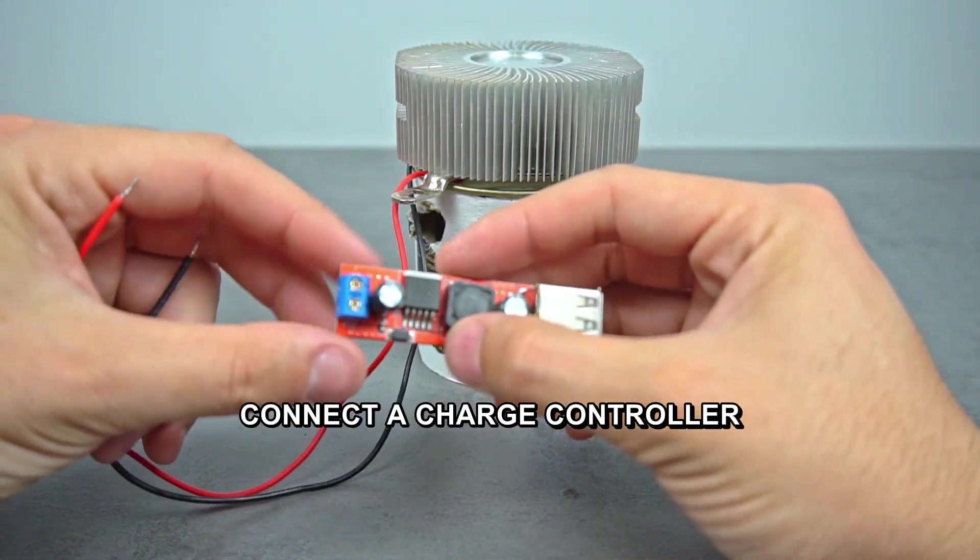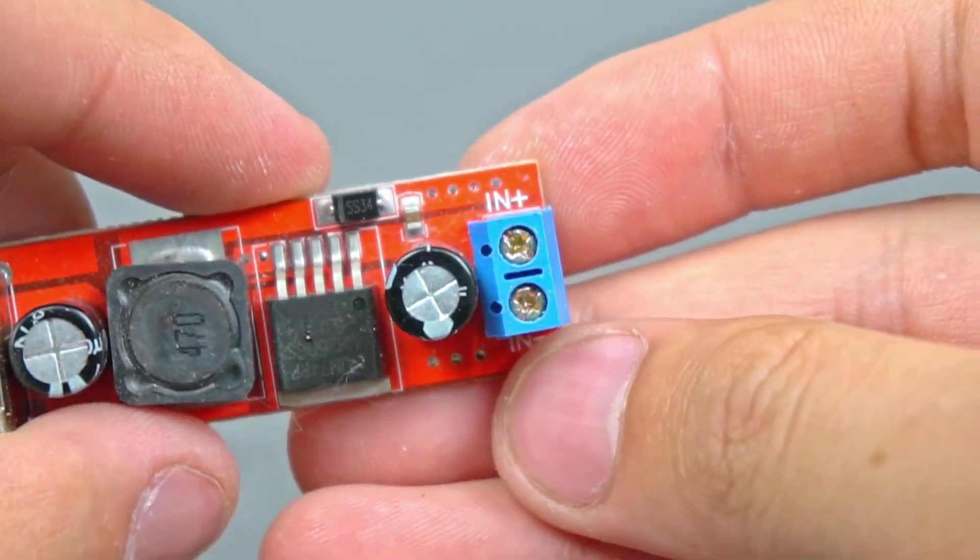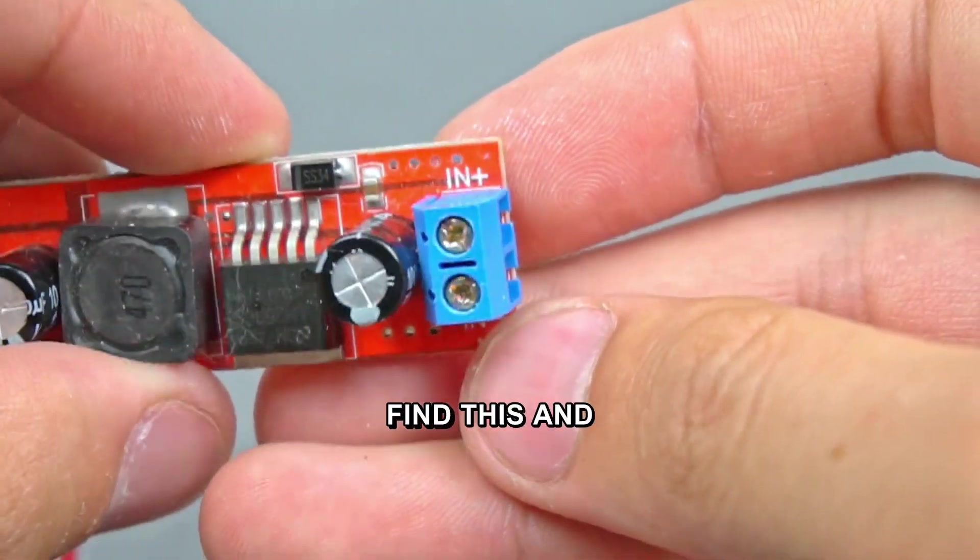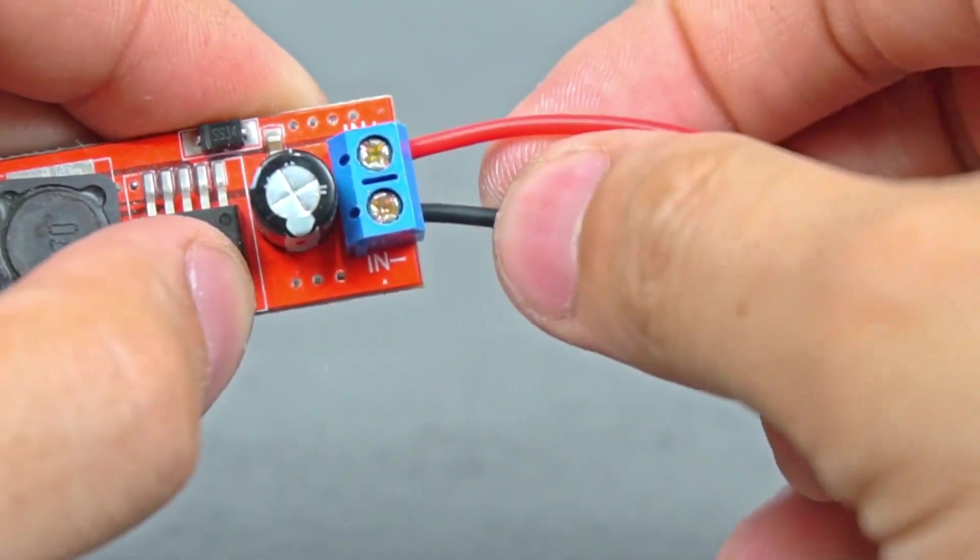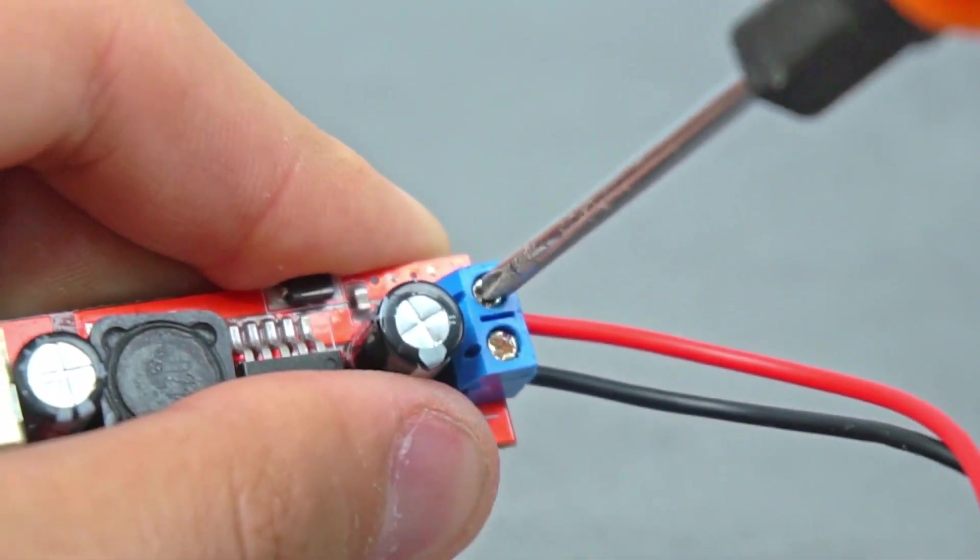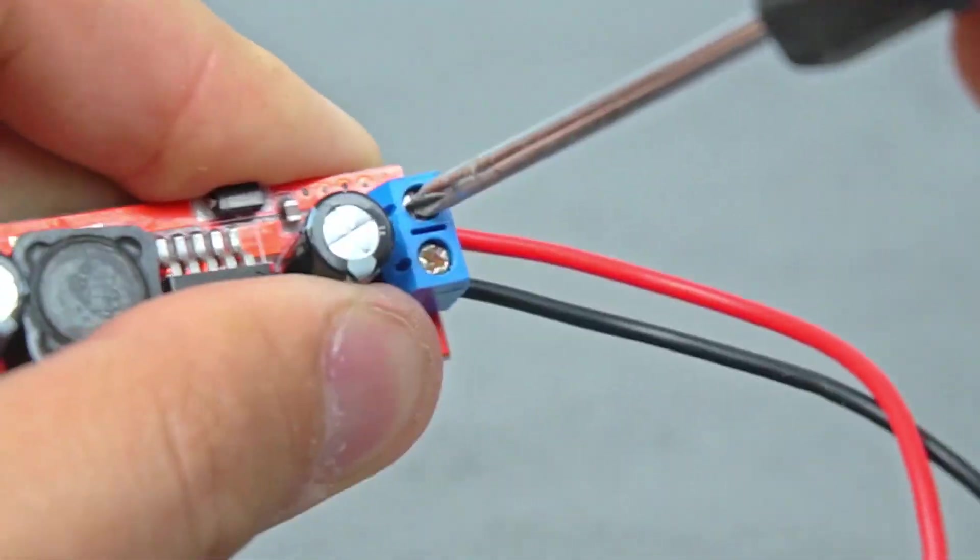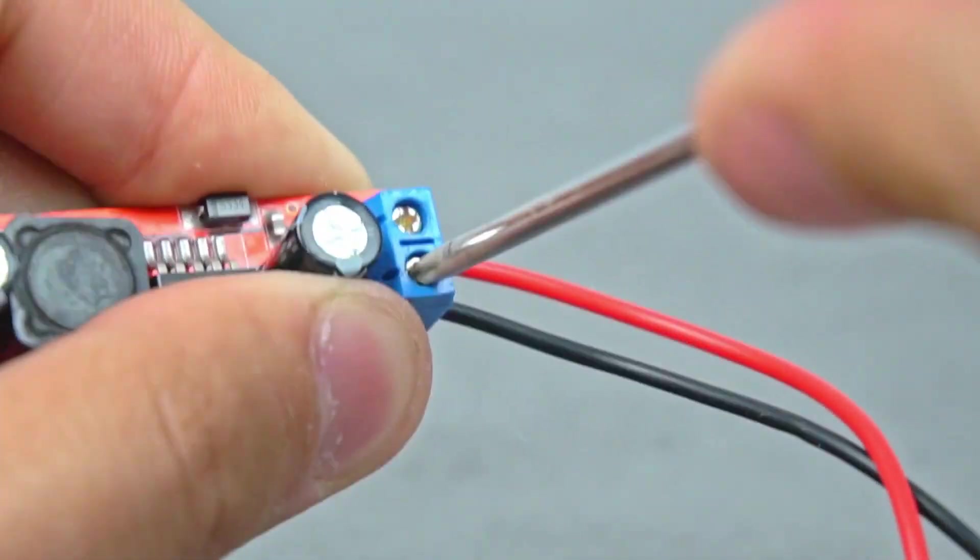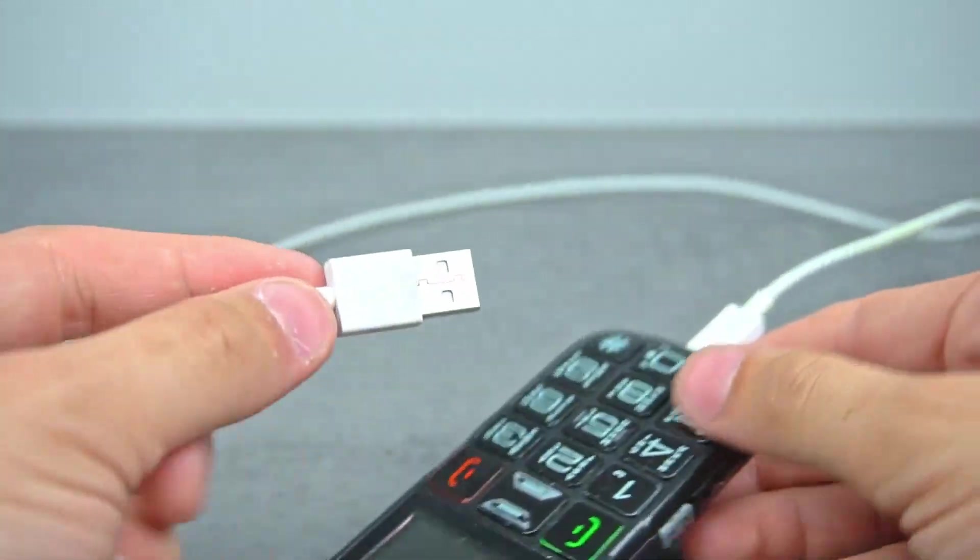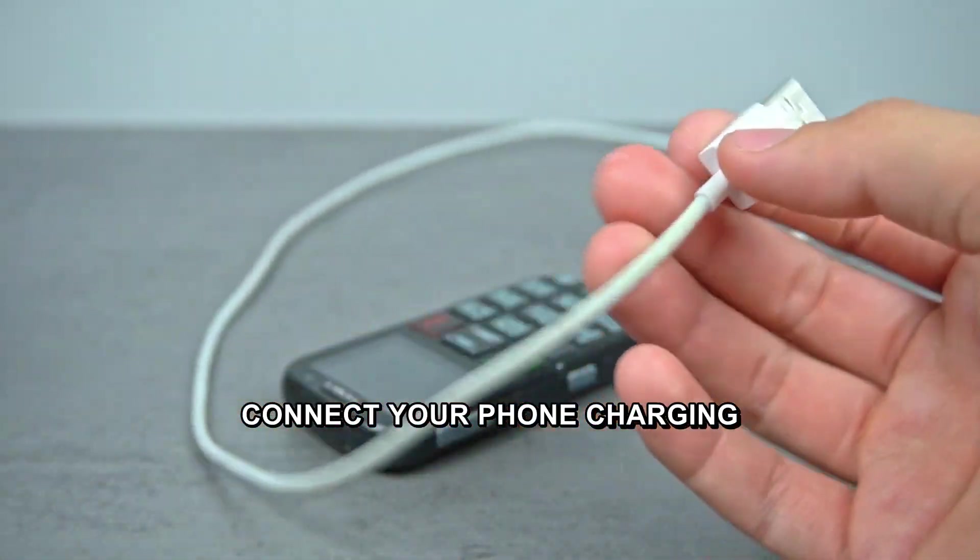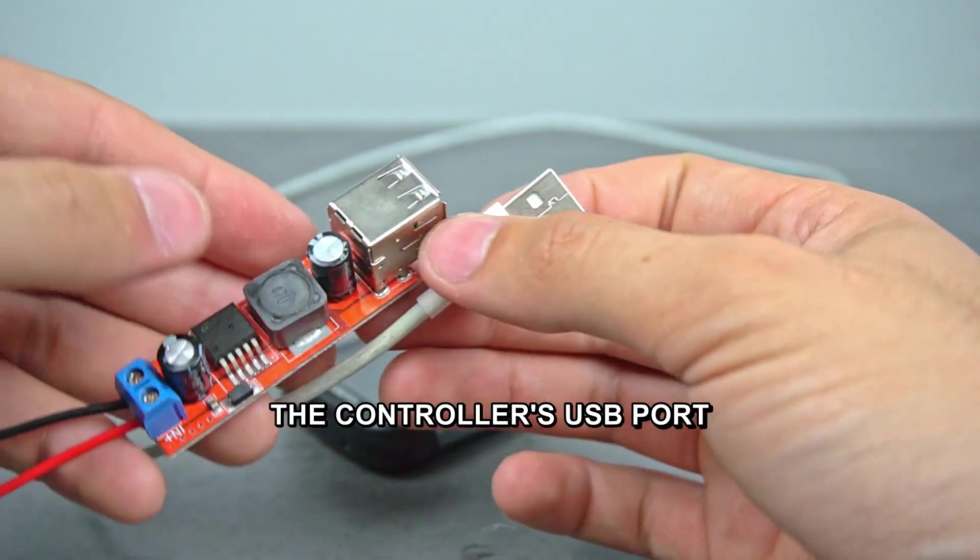Connect a charge controller with USB port to the circuit. If you don't know where to find this and other components, we'll leave links in the video description. Connect your phone charging cable to the controller's USB port.